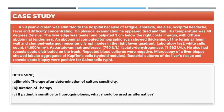Let us consider a case study. A 29-year-old man was admitted to the hospital because of fatigue, anorexia, malaise, occipital headache, fever, and difficulty concentrating. On physical examination, he appeared very tired and fairly thin. His temperature was recorded at about 40 degrees Celsius. The liver edge was tender and palpable three centimeters below the right costal margin with diffuse abdominal tenderness. An abdominal CT scan showed thickening of the terminal ileum wall and clumped, enlarged mesenteric lymph nodes in the right lower quadrant.